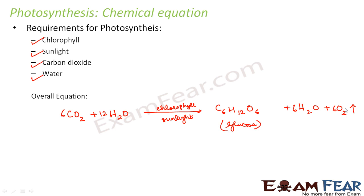Other than chlorophyll, sunlight, carbon dioxide, and water, plants also need many other nutrients like nitrogen, phosphorus, sulfur, etc. Those nutrients are classified into macronutrients — needed in large amounts — and micronutrients — needed in lesser amounts. The starch produced as a result: many glucose molecules join together to form starch, and starch is stored as food inside the plants.